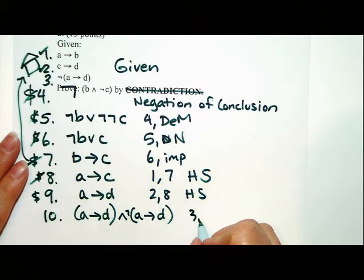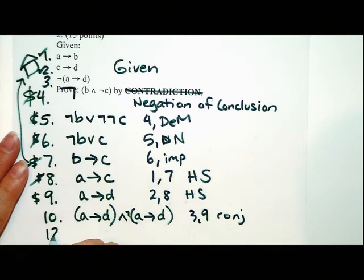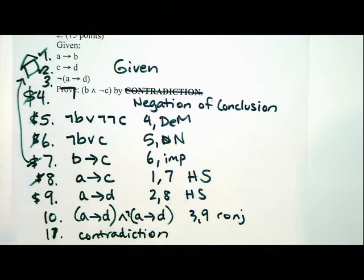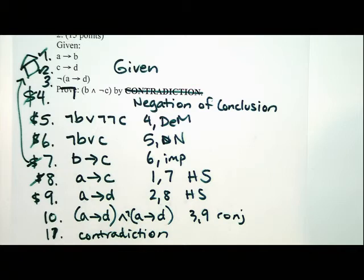We add those two things together from lines three and nine, and conjunction is the rule. Then we write the word contradiction. Any questions on this proof? Any valid proof is okay. It does ask for a proof by contradiction — if you do it by direct proof, we'll take off probably four points. If you do it the cheap way, we won't take off any points. Any proof that is correct will be marked correct. If you do a proof and you're pretty sure it's correct and it gets marked wrong, just bring it to the TAs during office hours and have it checked.